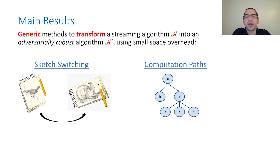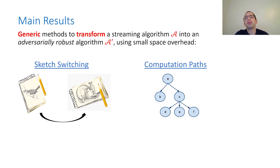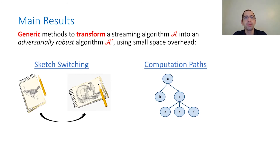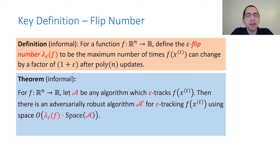The two techniques are called sketch switching and computation passes. Sketch switching runs many copies of the original algorithm and switches between them so the adversary cannot exploit the output of any single one. Computation passes runs just one copy of the algorithm but ensures its error probability is very very small — making it hard for an adversary to exploit.